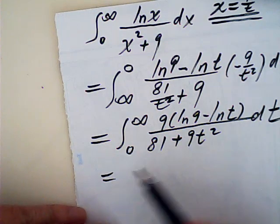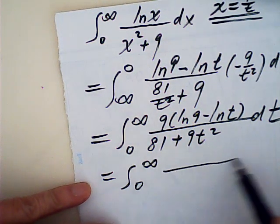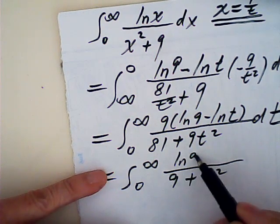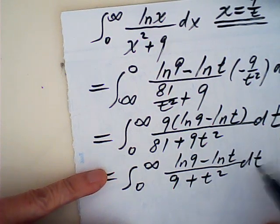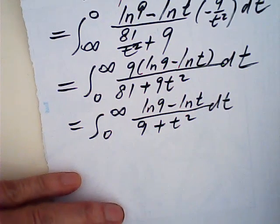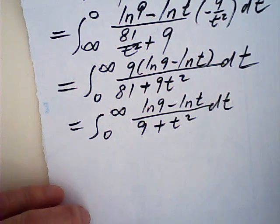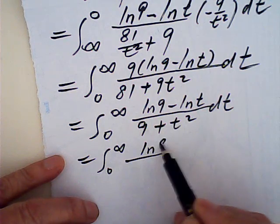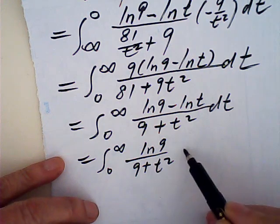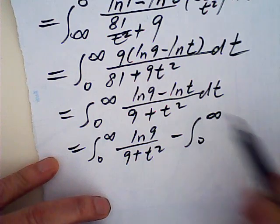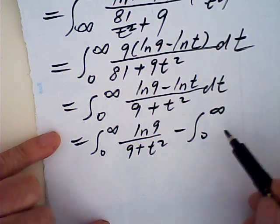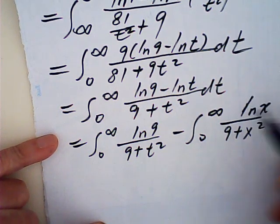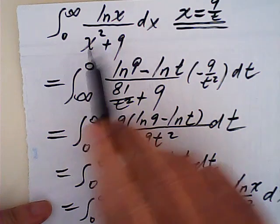We simplify further, dividing by 9, giving us the integral from 0 to infinity of 1 over 9 plus t squared, times log 9 minus log t, dt. Now, t is just a dummy variable — we can replace it with x: 9 plus x squared times log x dx, which is exactly the given integral.